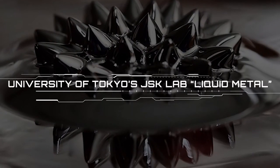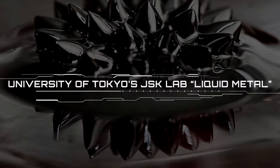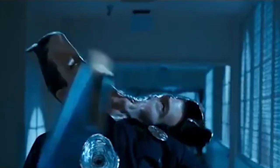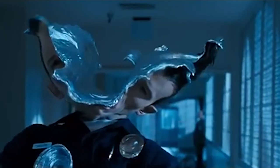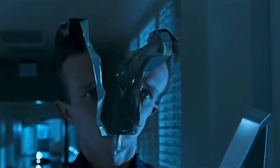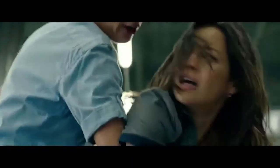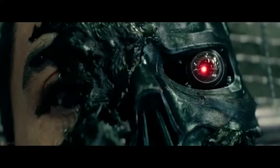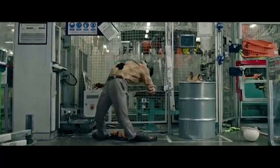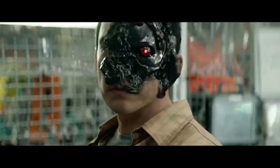University of Tokyo's JSK Lab – Liquid Metal. Since fans first saw T-1000, the shape-shifting antagonist from Terminator 2, Judgment Day, many people have been anticipating the day in which robots made out of liquid metal became a reality. Fast forward to the closing days of 2019. While robotics haven't quite advanced to the level of the future sequences seen in T-2, science is getting closer.